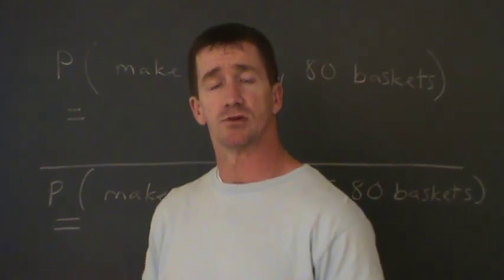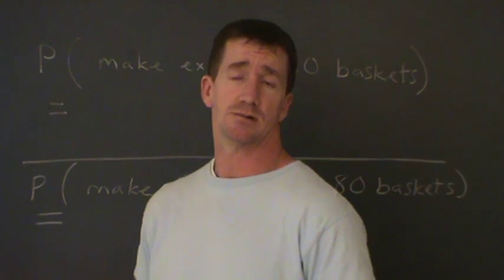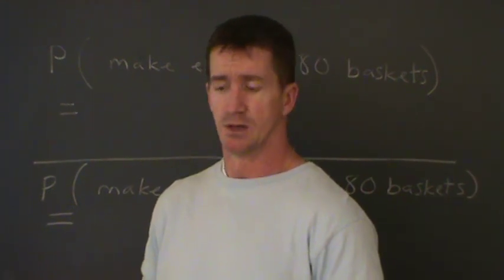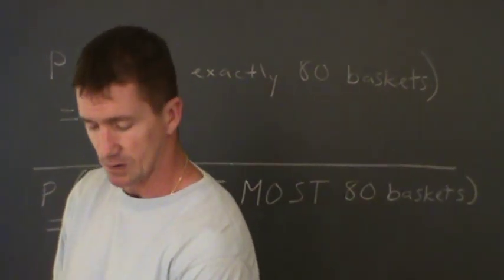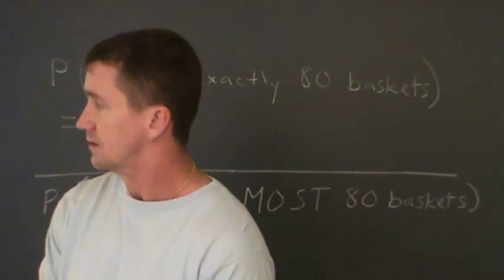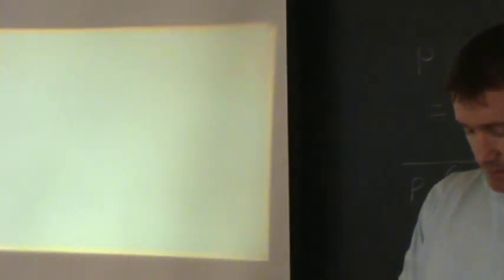So we have a binomial distribution — either the person makes the basket or doesn't make it. Let's look at this with the TI-83 or TI-84. I'm going to turn my calculator on. The first button I'm going to go to is the distribution button above the VARS button — second distribution. I'm going to scroll down to binomial PDF.